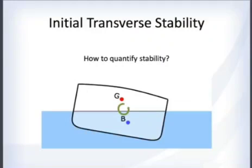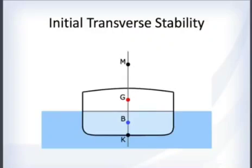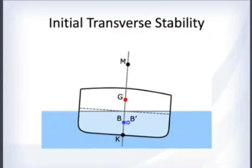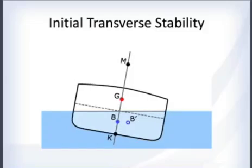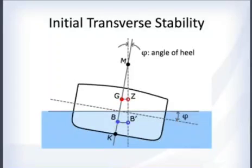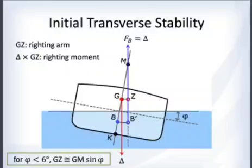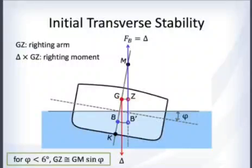To quantify stability, we take the ship and tip it over incrementally, tracking where the center of buoyancy shifts. We stop at a given angle of heel and add force vectors: the buoyant force acts upward through the current center of buoyancy B prime.